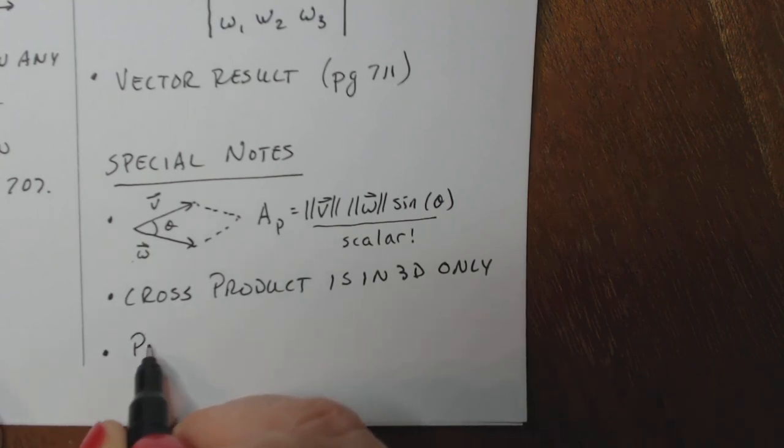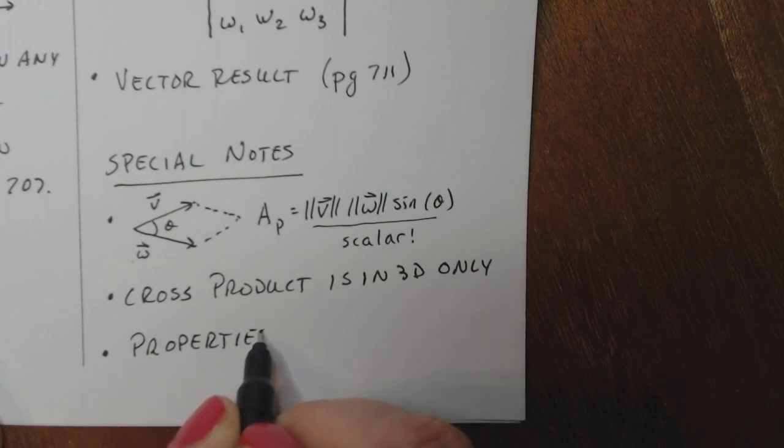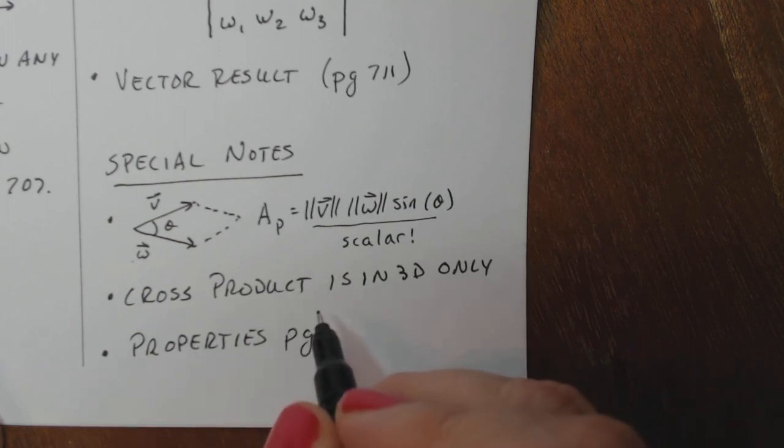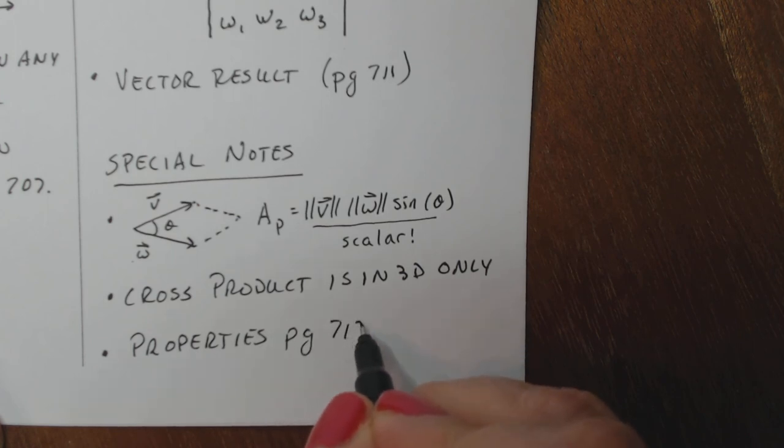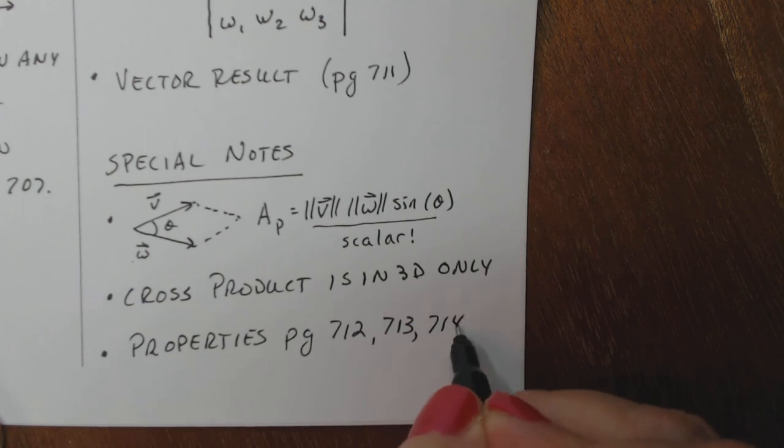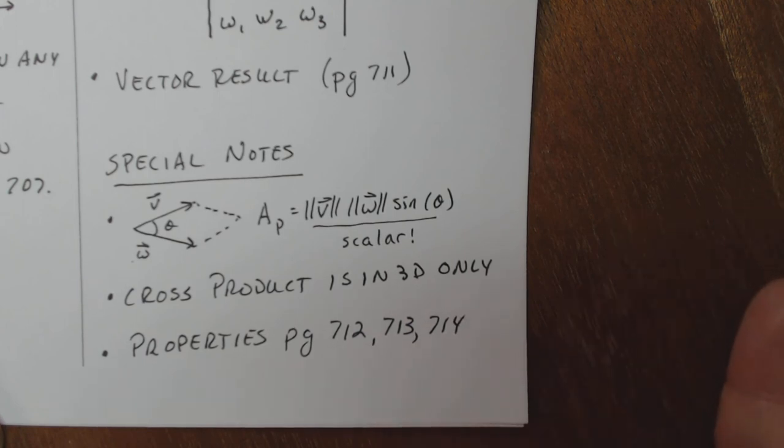And then I want you to take a look at the properties on pages 712, 713 and 714. Again, it's the stuff that's in the boxes. Take a look at that before you start doing the problems.